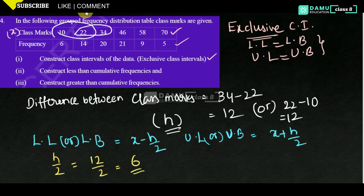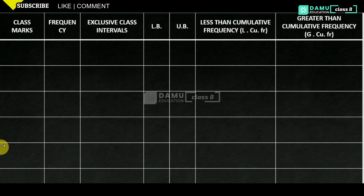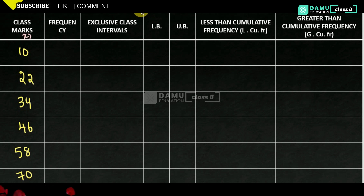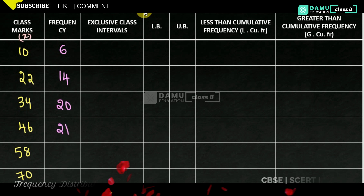So x is the class marks. We can construct exclusive class intervals using this. First write class marks: 10, 22, 34, 46, 58, 70. The columns will be: class marks (x), frequency, exclusive class intervals, lower limit, upper limit, less-than cumulative frequency, greater-than cumulative frequency. The frequency values are 6, 14, 20, 21, 9, 5.